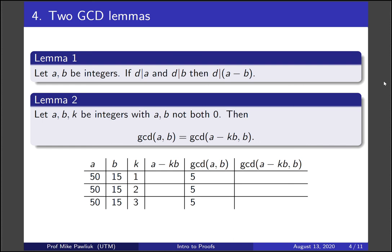Okay, so in the first row, if we remove one copy of b, that will turn a into 35. And the GCD of a and b for all of these is 5. And now the next question is, what's the GCD of a minus kb and b? So what's the GCD of 35 and 15? Well, you can think about it, it's 5.